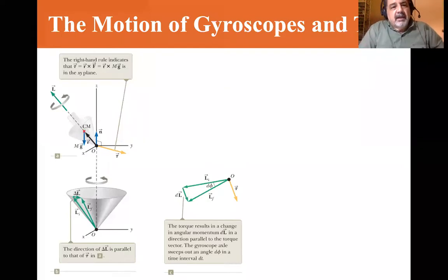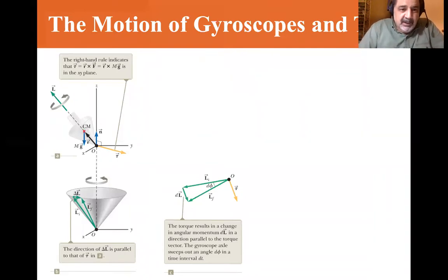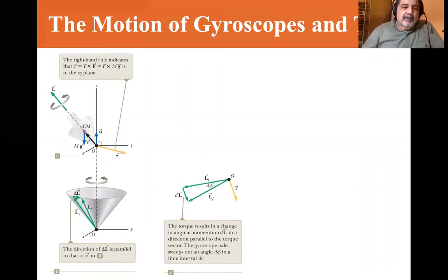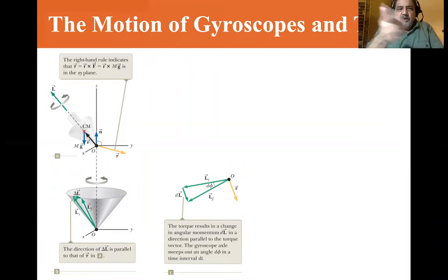The right-hand rule indicates that the torque is equal to R cross F where F is equal to MG and it's in the XY plane. And you can see the way they show the top here, it's spinning counterclockwise as viewed from the top. So right-hand rule that would put the angular momentum vector upward. So you have the force downward with the angular momentum vector, and it produces a change in the angular momentum that causes the top to precess.